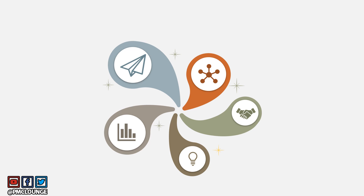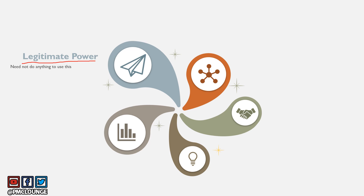Let's quickly touch upon these five different types of power and then decide which one or which ones you should be using at all times. First: legitimate power. If you are a project manager in a projectized environment, or a functional manager where people report to you, whether you like it or not you are using this power. You are the legitimate boss, the legitimate manager, so people will do whatever you tell them to. You don't have to do anything extra to use this power.